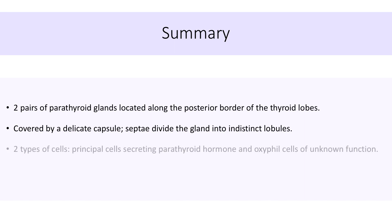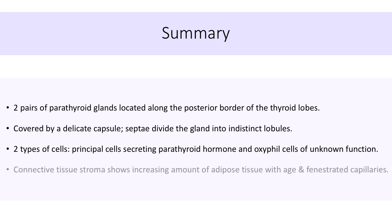Two types of cells are found in parathyroid gland: principal cells, which secrete parathyroid hormone, and oxyphil cells of unknown function. Connective tissue stroma shows increasing amounts of adipose tissue with age, as well as fenestrated capillaries.